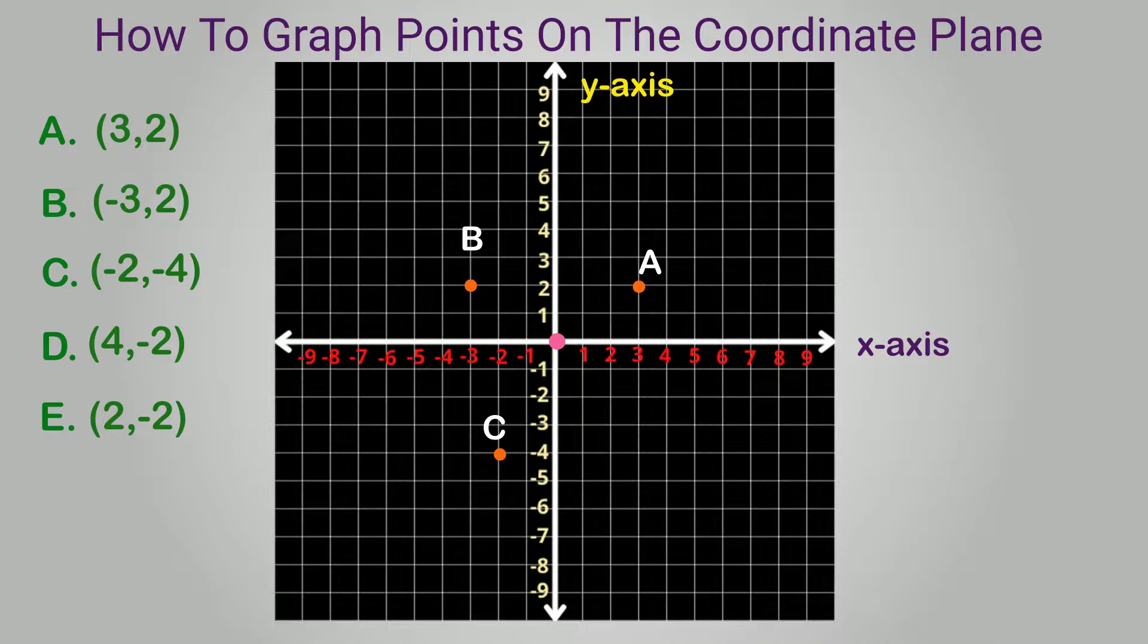Graph the coordinates positive 4, negative 2. The x value is positive, so we move back to the right four spots. The y value is negative, so we move down two spots. This point is located here, in quadrant 4.